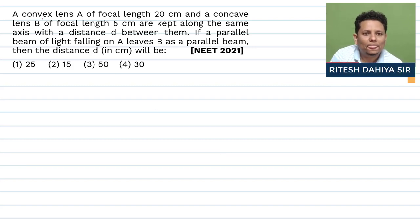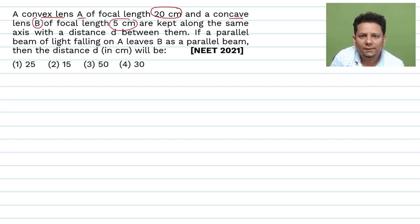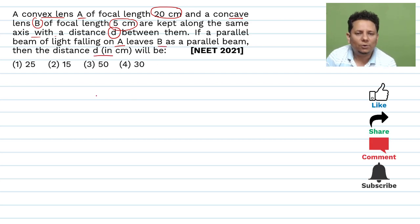All right, the question says a convex lens A of focal length 20 cm and a concave lens B of focal length 5 cm are kept along the same axis with a distance D between them. If a parallel beam of light falling on A leaves B as a parallel beam, then the distance D in cm will be.